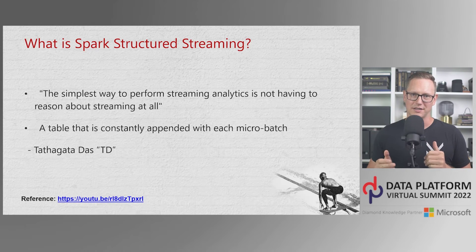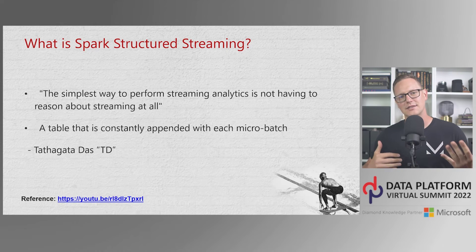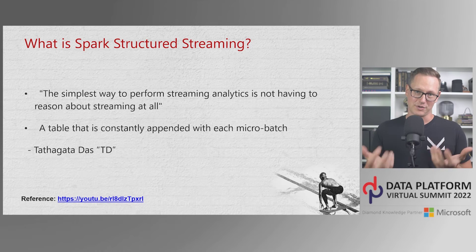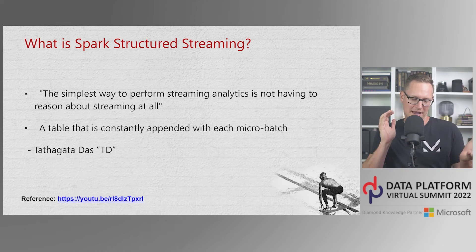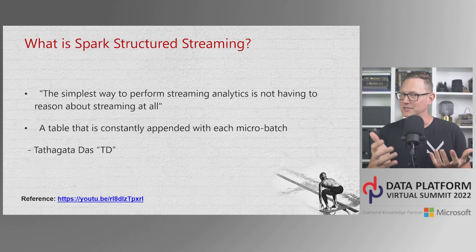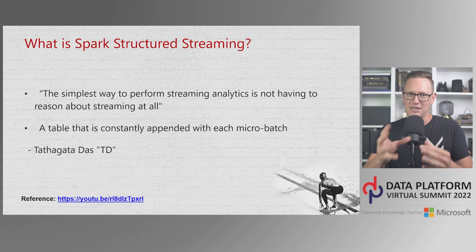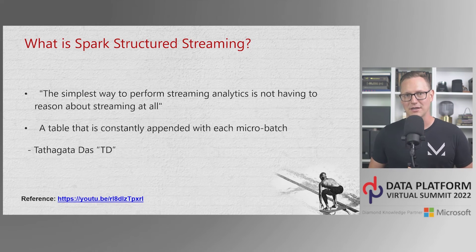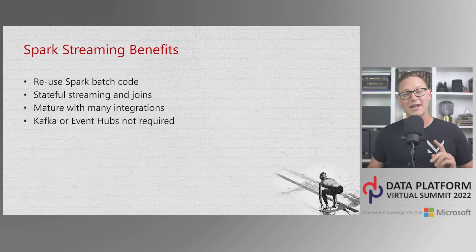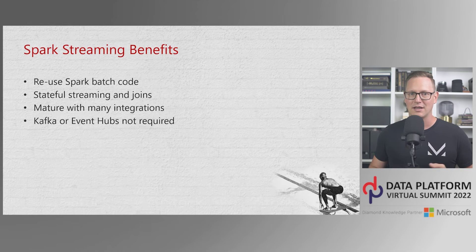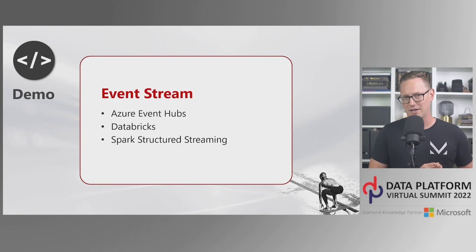Spark Structured Streaming is a way of dealing with streaming data without really thinking too much about streaming. We picture a table in the background constantly getting updated with new records, and we make decisions on whether we want just the latest records, a re-aggregated dataset, or updates to already-pushed data. I can reuse a lot of libraries from batch Apache Spark jobs, since streaming and batch have a lot in common — usually if you change the source and sink, the transformations in the middle can be the same.